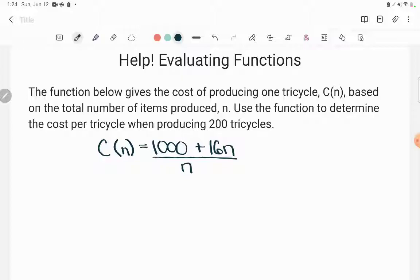The function below gives the cost of producing one tricycle, C(n). You read that as C of n, not C times n, based on the total number of items produced, n. Use the function to determine the cost per tricycle when producing 200 tricycles.